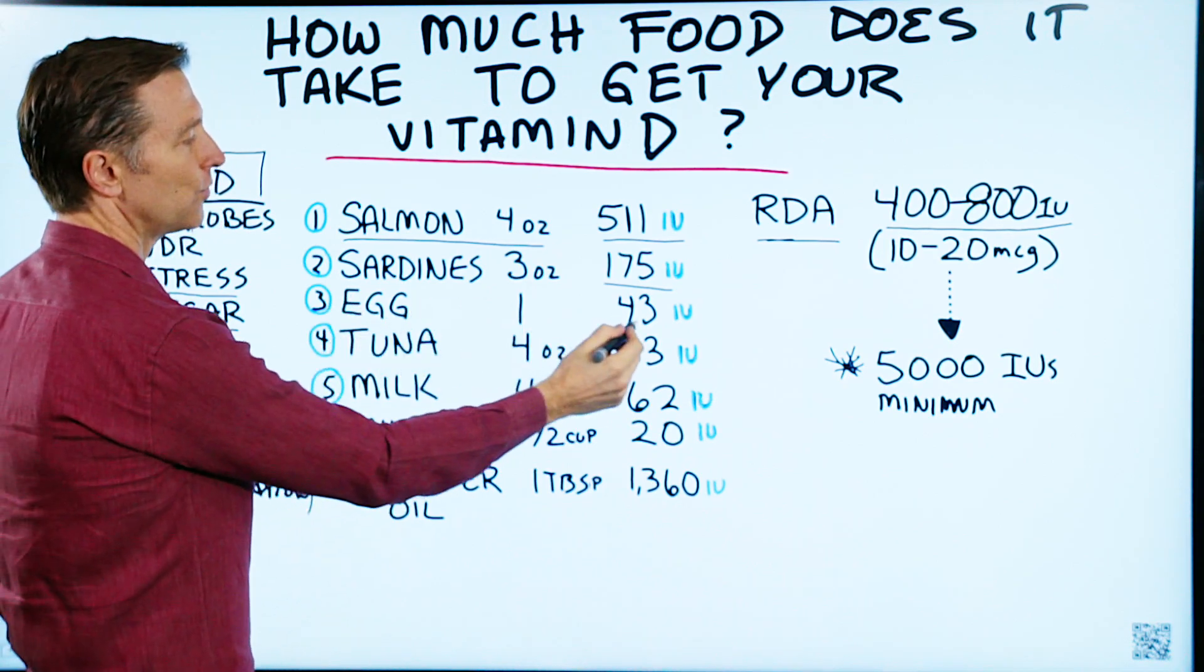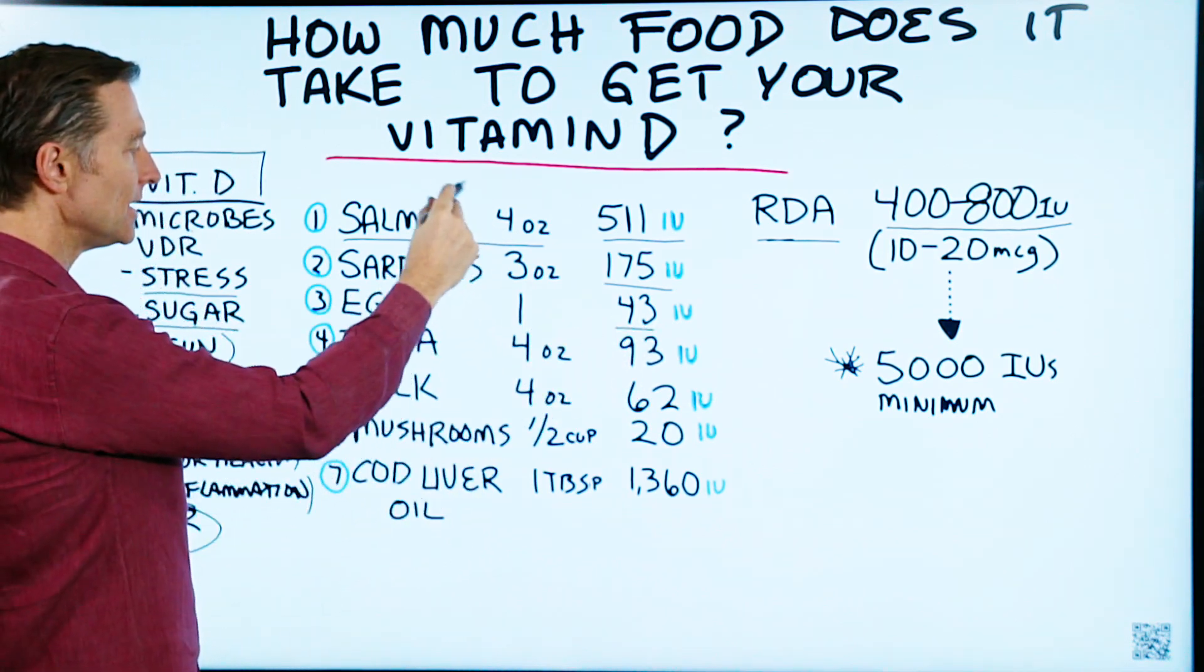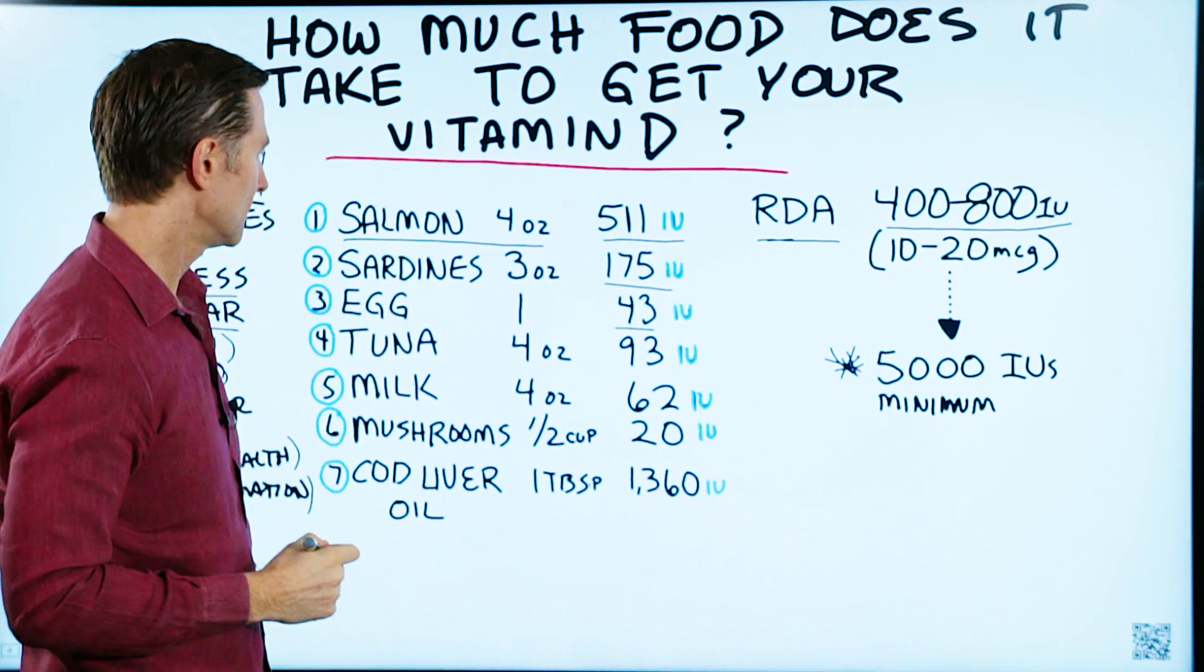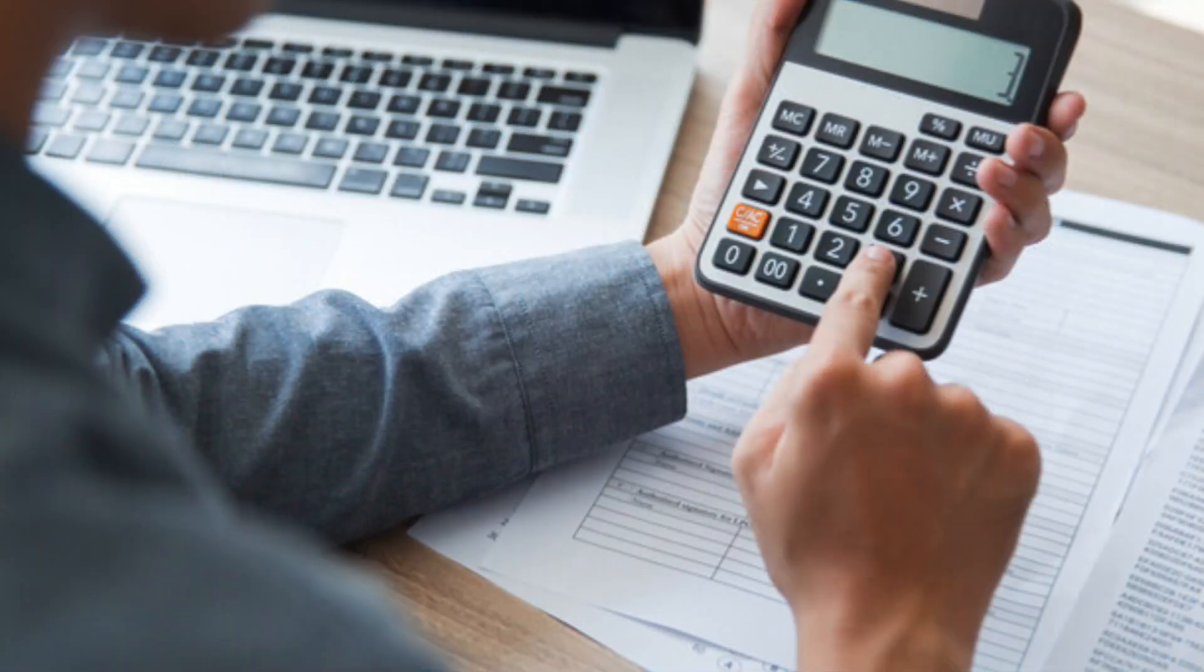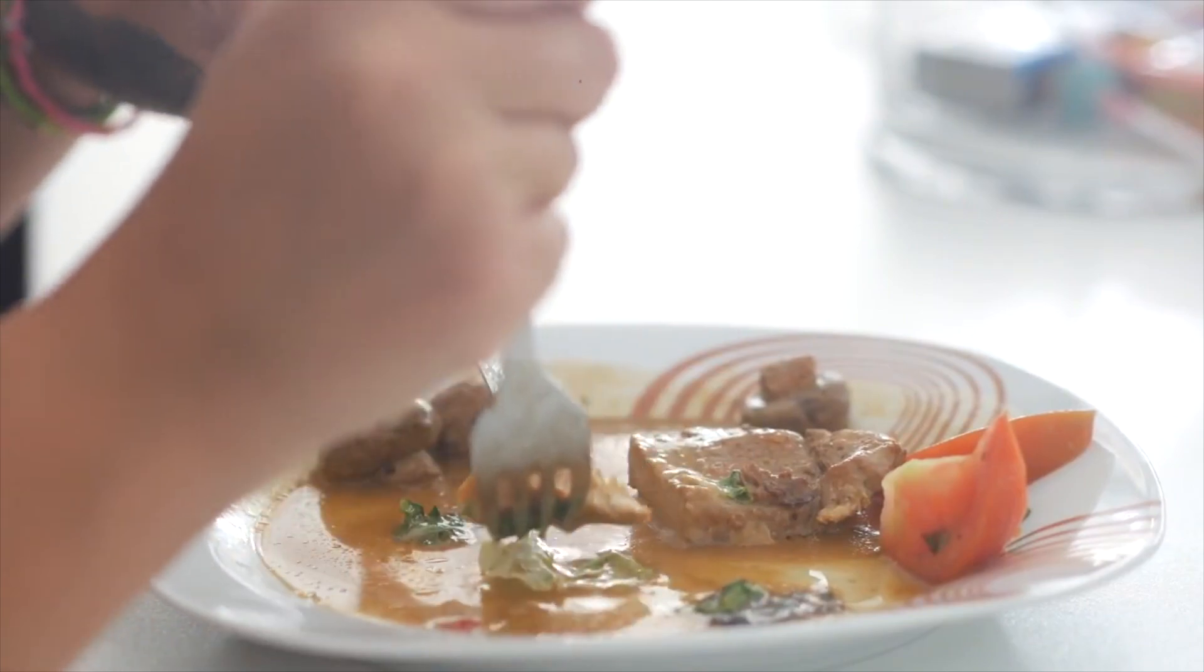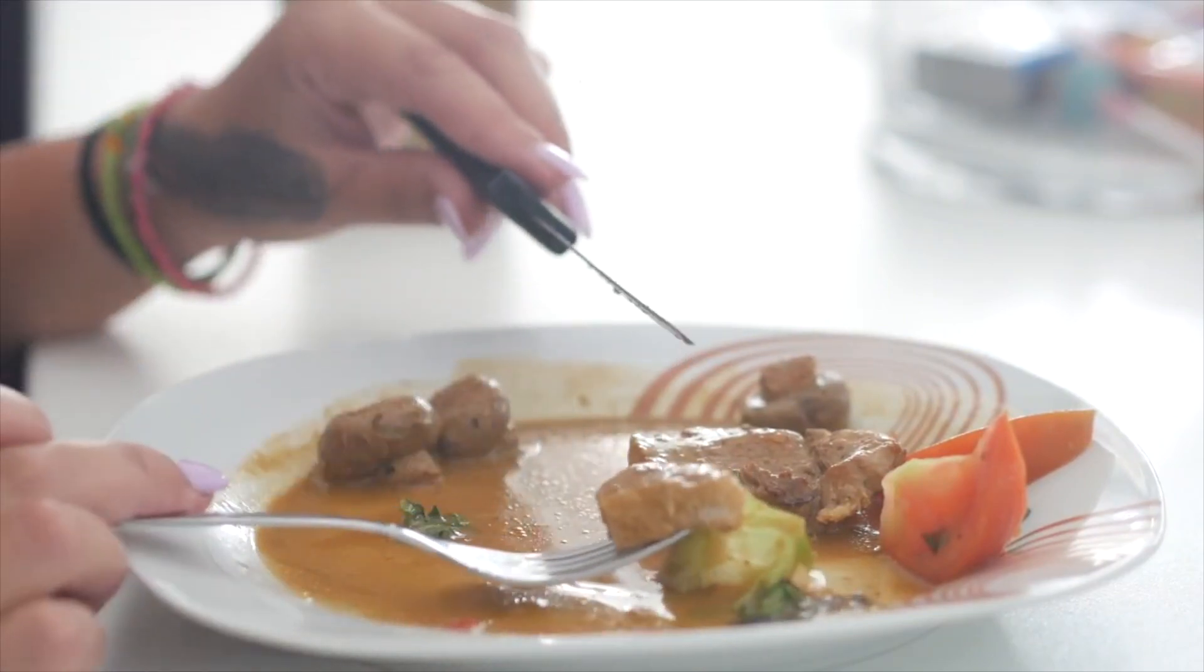One egg, 43 IUs. And these are the foods that are supposedly high in vitamin D. Tuna, four ounces, 93 IUs. And you can just do that math yourself and multiply the quantity you would need to really get this up to where you need to be. You'd have to consume a lot of food.